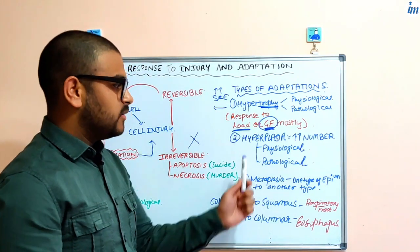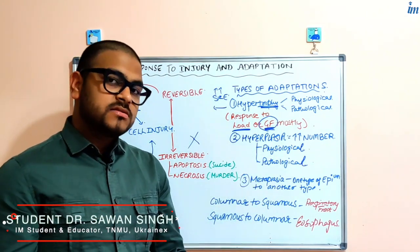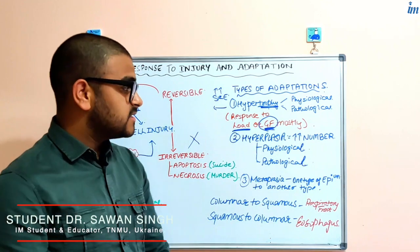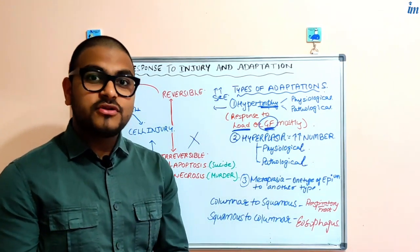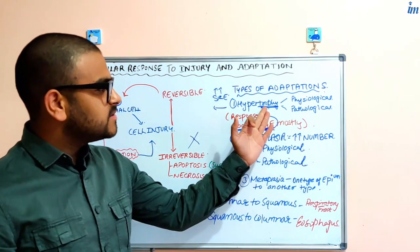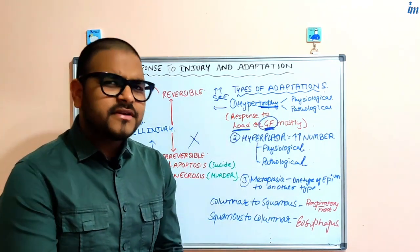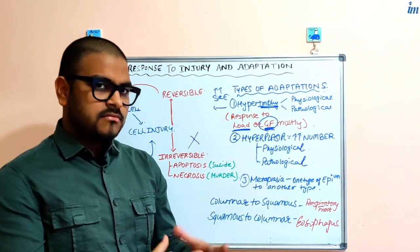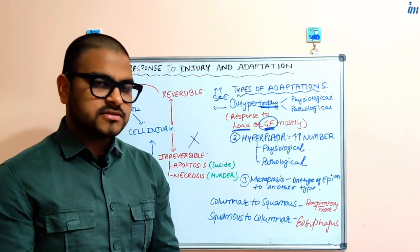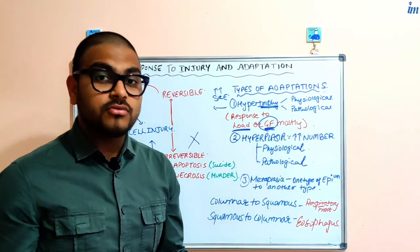Then we have hyperplasia. Hyperplasia is increase in the cell number. Cell number is increasing and this process is mostly seen in the cells that have good capacity to divide. Hypertrophy is seen in cells that have limited capacity to divide. Skeletal muscle doesn't divide very much, so they undergo hypertrophy and not hyperplasia. Whereas hyperplasia mostly occurs in cells that are able to divide very rapidly and nicely.